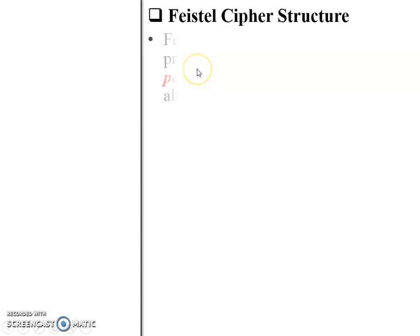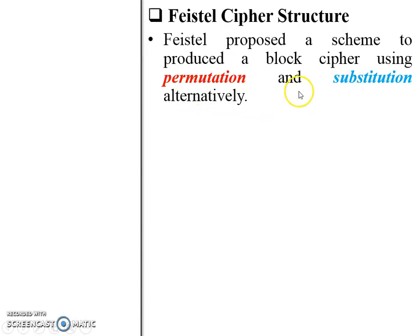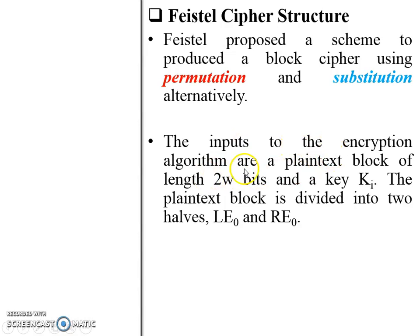Feistel proposed a scheme to produce a block cipher using permutation and substitution alternatively. Permutation means transposition — changing the position of the letter, or in block cipher, changing the position of blocks. Substitution means a block, number, or digit will be substituted by another block, number, or digit. Both techniques — permutation and substitution — are applied alternatively in Feistel cipher structure.